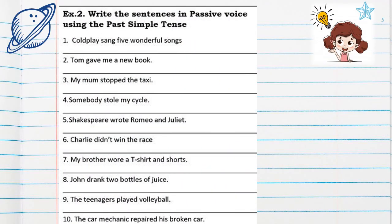Next exercise: write the sentence in passive voice using past simple. You have to change these sentences into passive voice. First one: a cold place sang five wonderful songs. How can we change this into past passive voice?